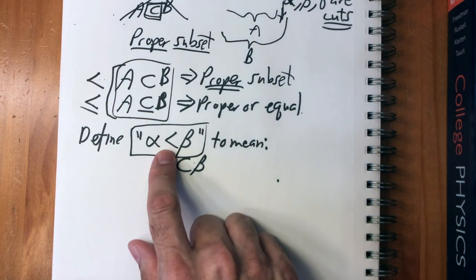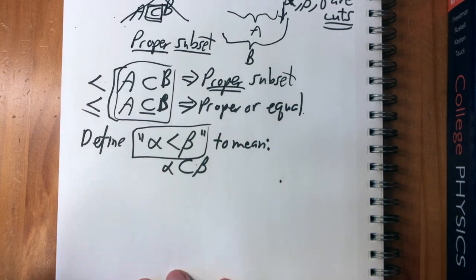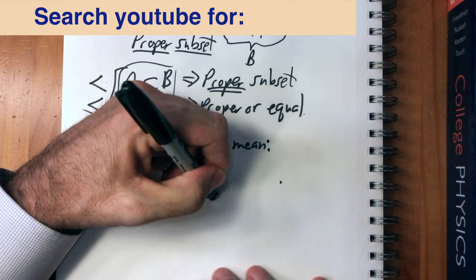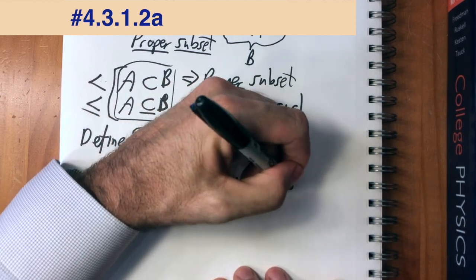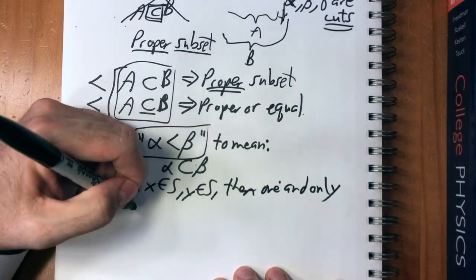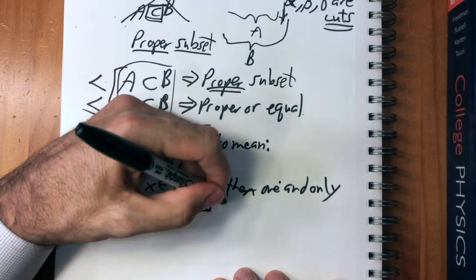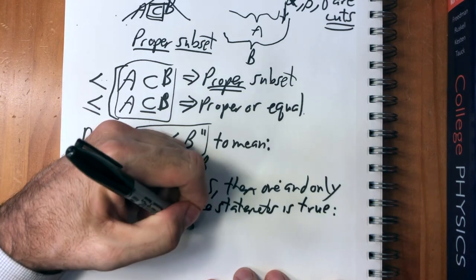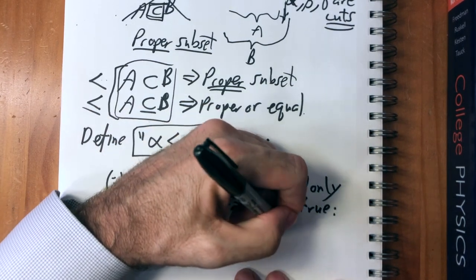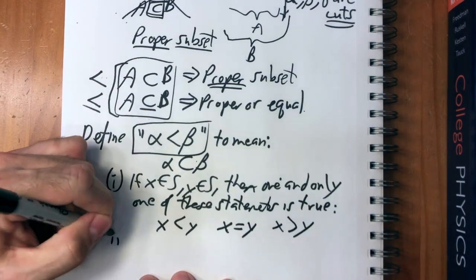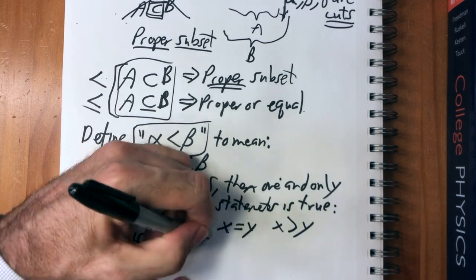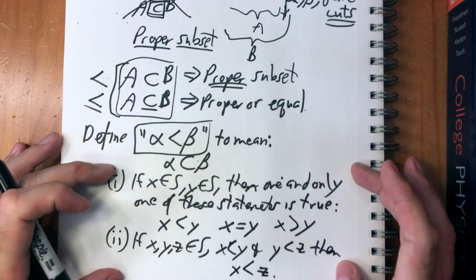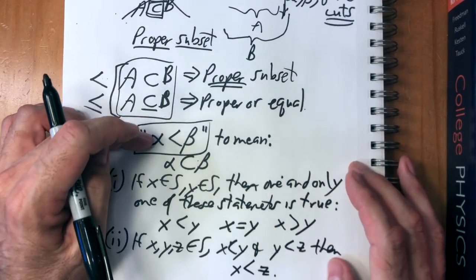So this is our order relation on R. Now we have to check that it fits the requirements of an ordering on a set. Those requirements are: if x and y are elements of a set S, then one and only one of these statements is true — either x is less than y, x equals y, or x is greater than y. And second: if x, y, z are elements of S and x is less than y and y is less than z, then x is less than z. If these two things are true then we've properly defined an order on our cuts.